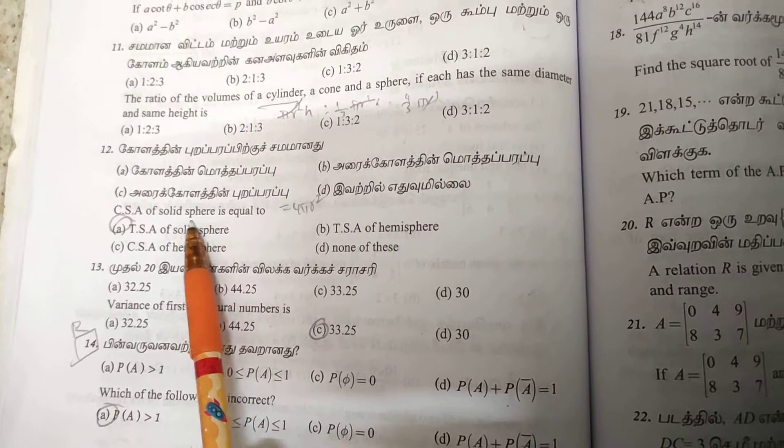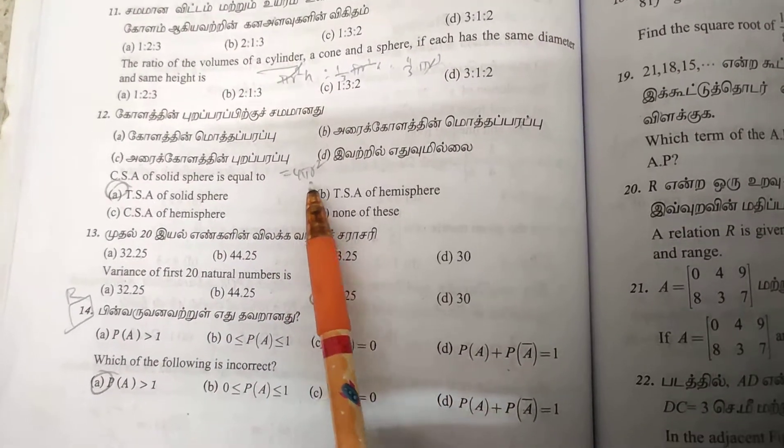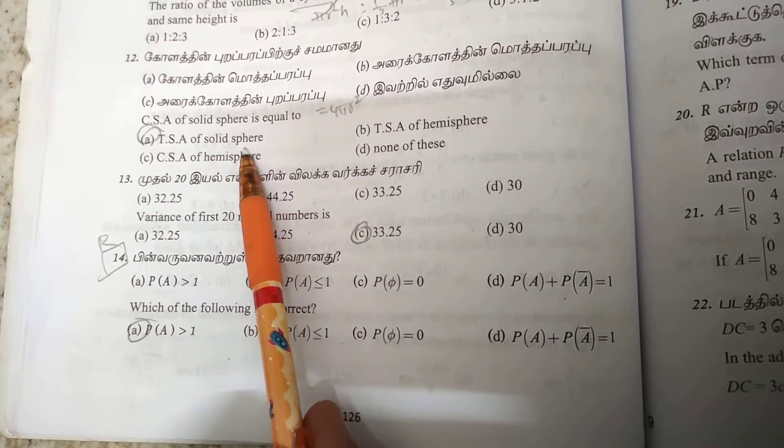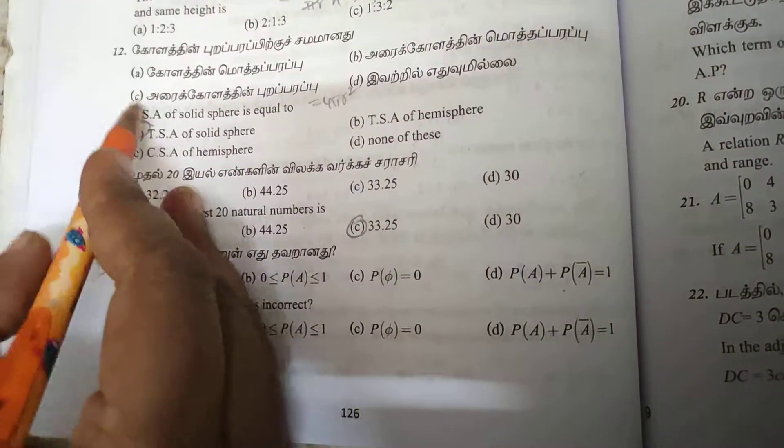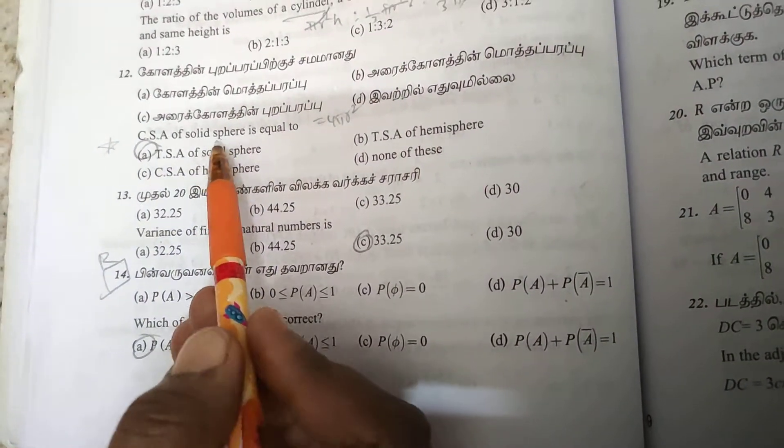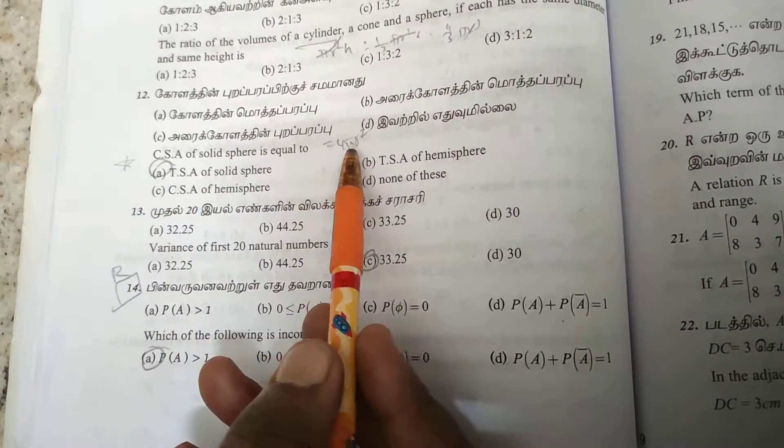Twelfth one: CSA of a solid sphere equals 4πr². The total surface area of a sphere is also 4πr². This is the correct formula.